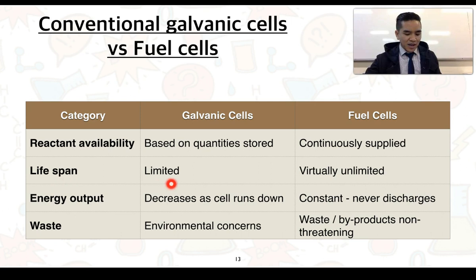In regards to lifespan, galvanic cells usually have a limited lifespan, including those rechargeable galvanic cells, whereas fuel cells are virtually unlimited. In terms of energy output, we know that with galvanic cells, this decreases as the cell runs down, whereas with the fuel cell, it's relatively constant because it's never discharging. And finally, in regards to waste, there are environmental concerns with the disposal of batteries or portable galvanic cells, and even some non-portable forms like car batteries. Whereas with fuel cells, the waste or byproducts are often non-threatening. So in the previous examples, we could see that only water was a byproduct, and we know that's not going to be threatening.